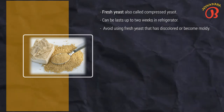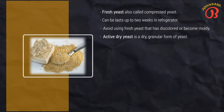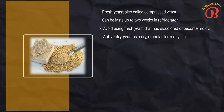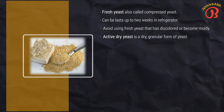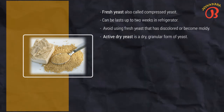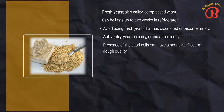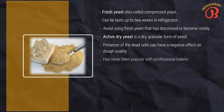Next is active dry yeast. Active dry yeast is a dry, granular form of yeast. It must be rehydrated in four times its weight of warm water before use. When using active dry yeast in a bread formula, use part of the water in the formula to dissolve the yeast — do not add additional water. About 25% of the yeast cells in active dry yeast are dead due to the harsh conditions of the drying process. The presence of dead cells can have a negative effect on dough quality. For this reason, active dry yeast has never been popular with professional bakers.